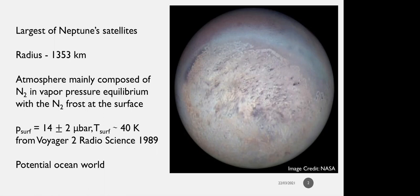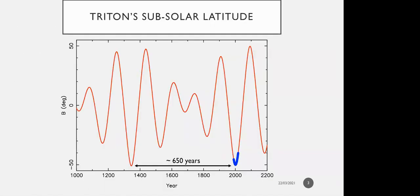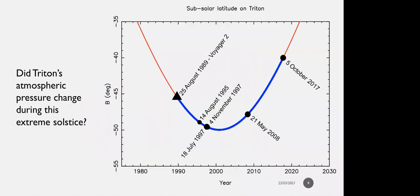Triton, along with Neptune, is the subject of a proposed NASA mission called Trident. Why is it important to study its atmosphere? Triton is currently coming out of its extreme solstice of 2000, where latitudes of up to 50 degrees south were directly and constantly illuminated by the Sun. That only occurs about every 650 years because of a combination of Neptune's heliocentric motion and Triton's orbital precession. This is the best time to do observations on Triton to answer whether its atmospheric pressure changed during the extreme solstice.